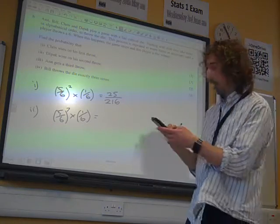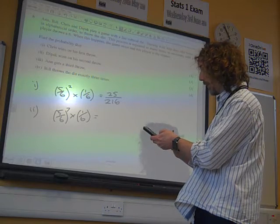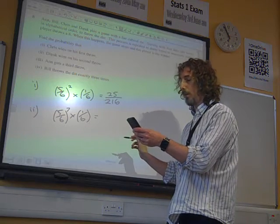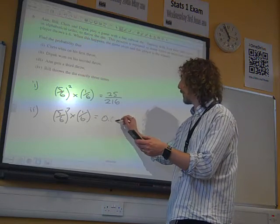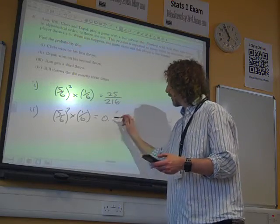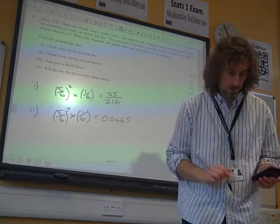So that is, I think I can just change my calculation on the screen, and I'll make it a little bit less typing. Oh, 0.0465, it's refused to give it me as a fraction. 0.0465 is our answer to that one.